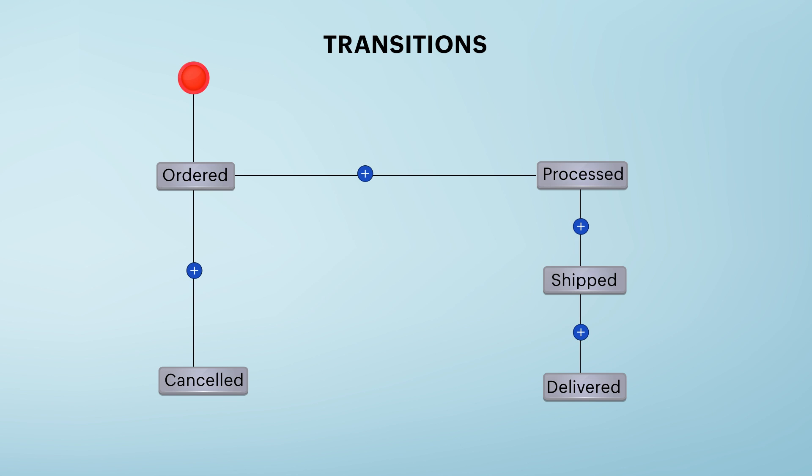In the order processing example, you can create a transition such as 'Picked by Courier' to move the process from the Processed to the Shipped stage. Between Shipped and Delivered, there can be another transition called 'Delivered to Customer.' The stage gets updated when the transition owner performs the action. This is called a regular transition.